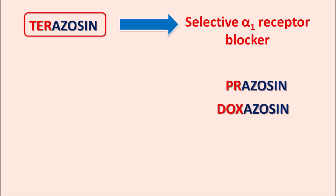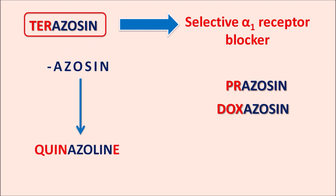We also have other drugs like Alfuzosin and Tamsulosin, which have somewhat different suffixes. But Terazosin, Prazosin, and Doxazosin share the same suffix, indicating they are selective alpha-1 receptor blockers. The suffix '-azosin' indicates they contain a quinazoline moiety. From quinazoline we get '-azolin', and the 'L' is replaced with 'S', where 'S' stands for selective. So Terazosin, Prazosin, and Doxazosin are all selective alpha-1 receptor blockers with a quinazoline moiety in their structure.